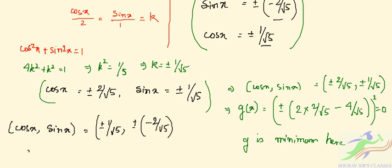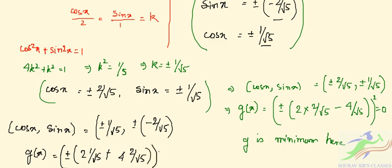For the other pair, taking cos x = -1/√5 and sin x = -2/√5, we substitute into g(x). We get ±(2·(1/√5) + 4·(2/√5)) = ±(2/√5 + 8/√5) = ±(10/√5). Squaring this whole expression gives 100/5 = 20. So the maximum value of g(x) is 20.